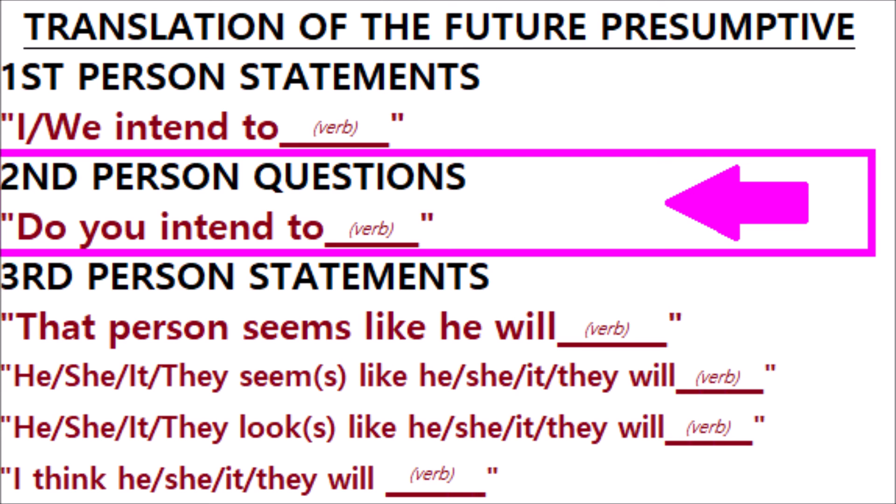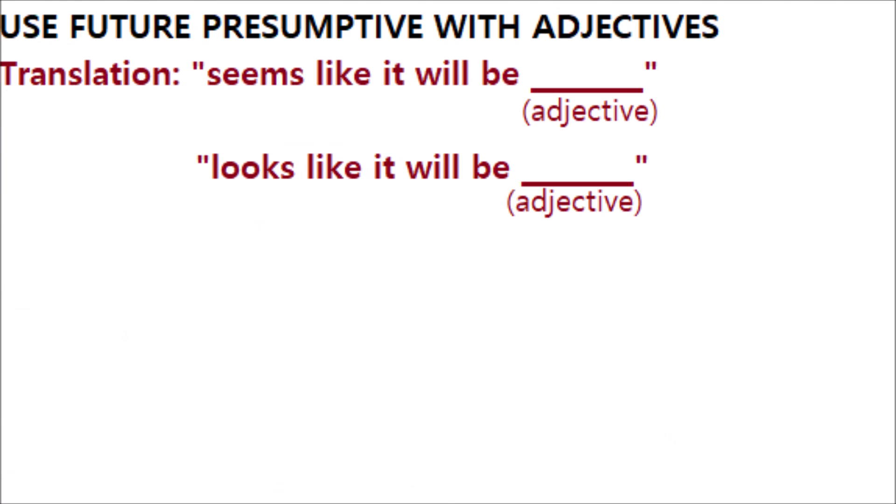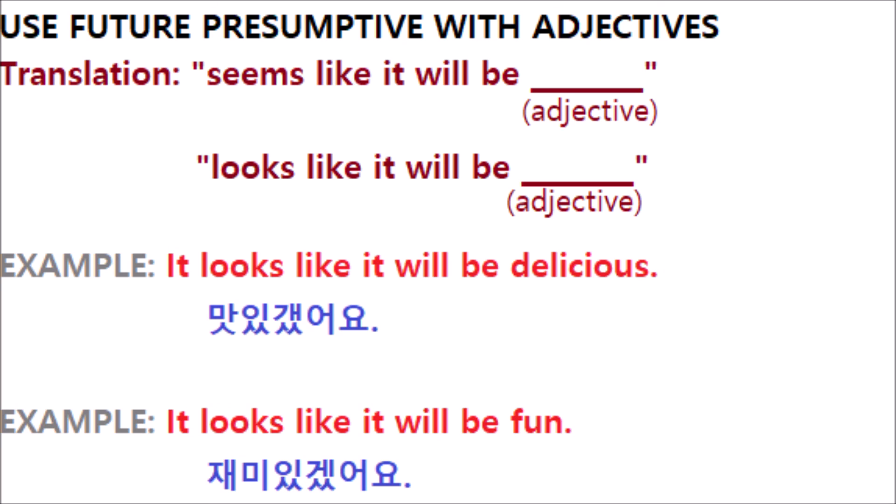We'll learn more about asking questions in later videos. If that wasn't enough, there is another way to use the future presumptive — with adjectives. When you use the future presumptive with adjectives, it makes sentences that translate to 'seems like it will be [adjective]' or 'looks like it will be [adjective].' For example: 'It looks like it will be delicious' — mashit getsayo. 'It looks like it will be fun' — jamie-it getsayo.